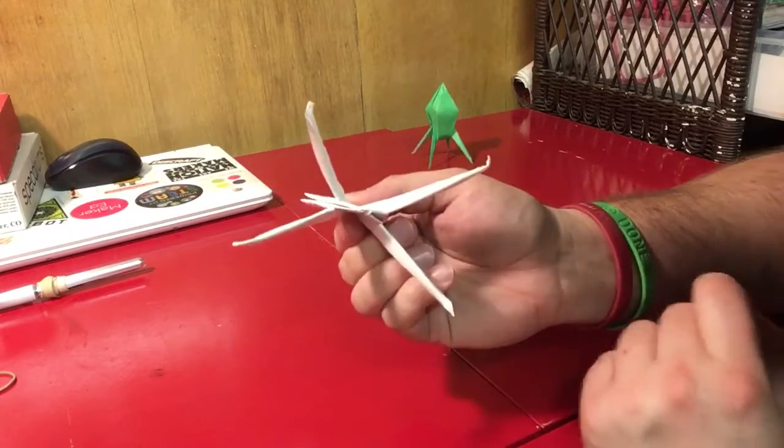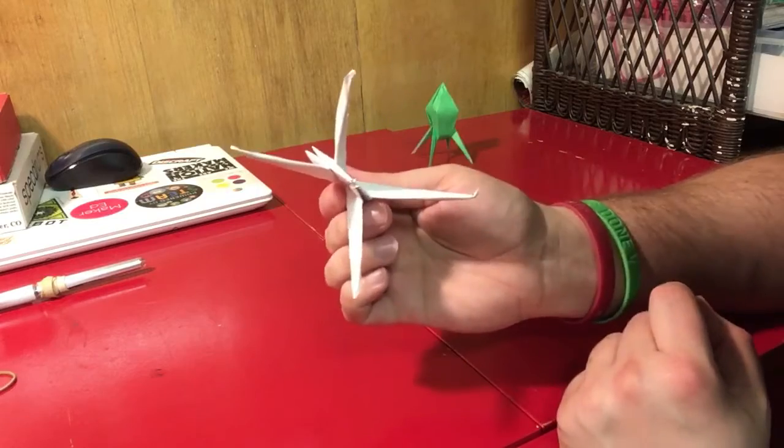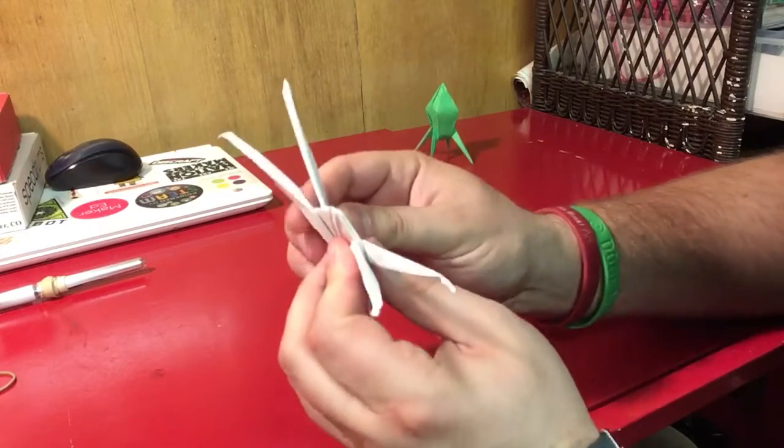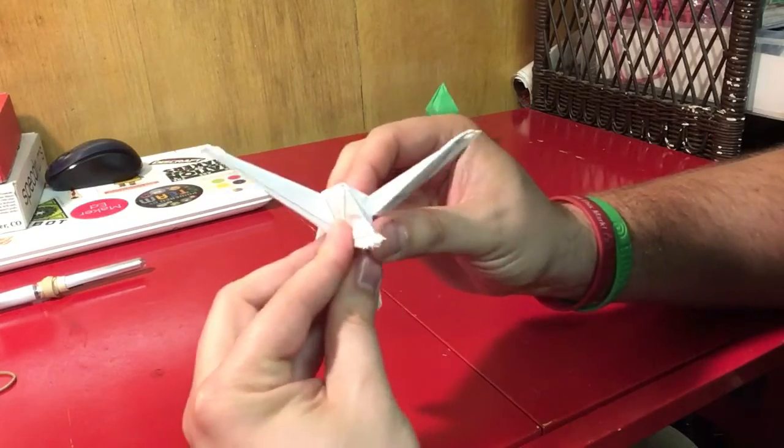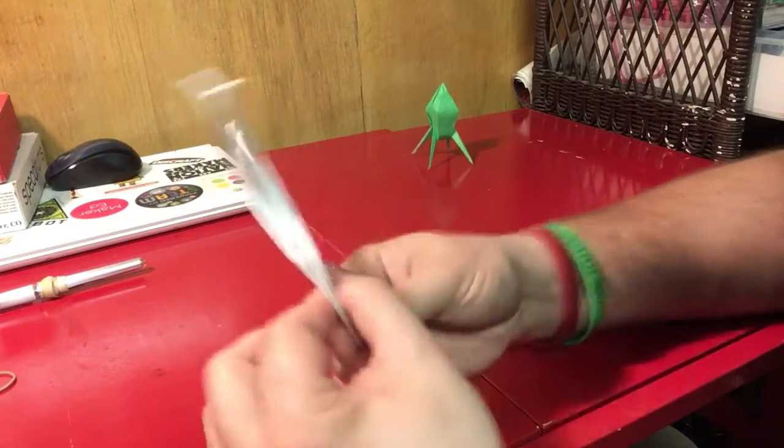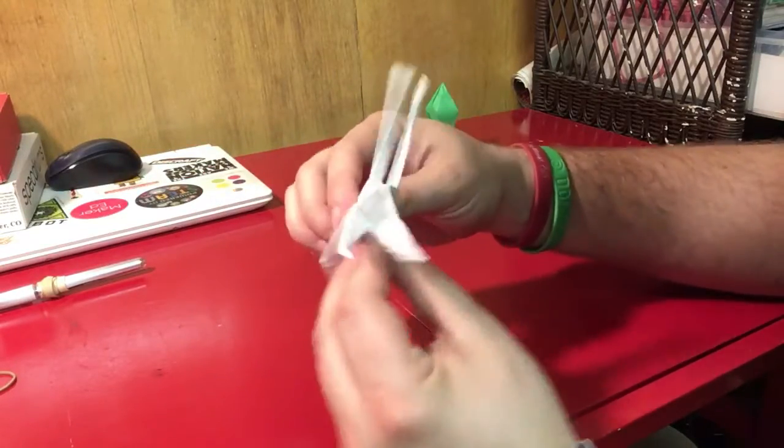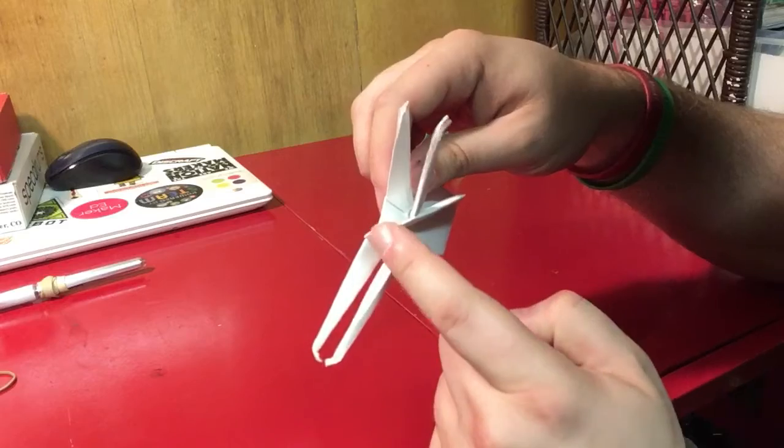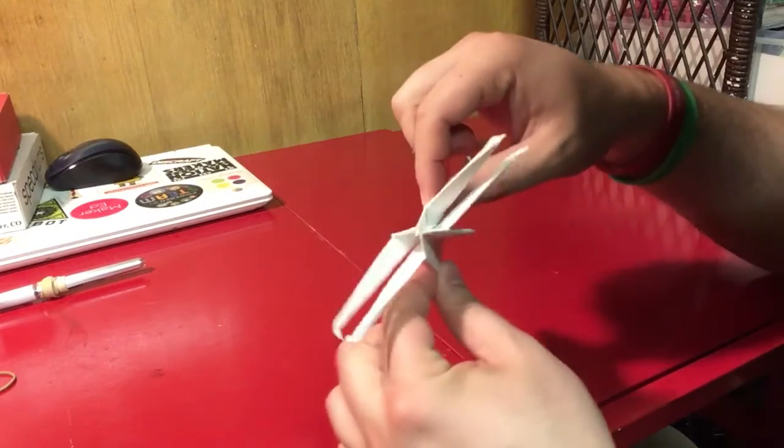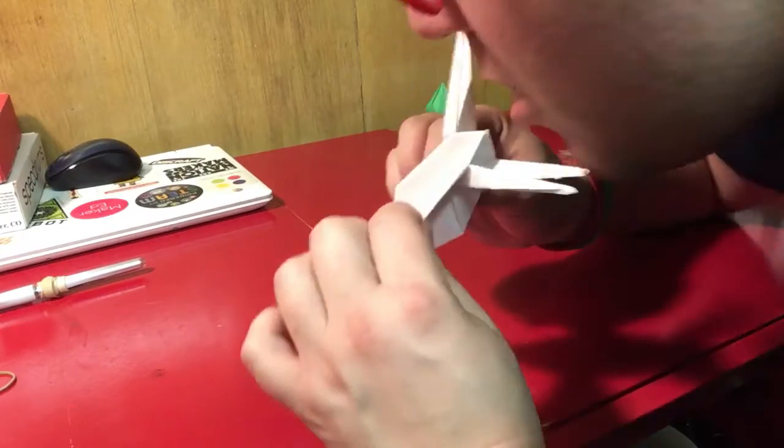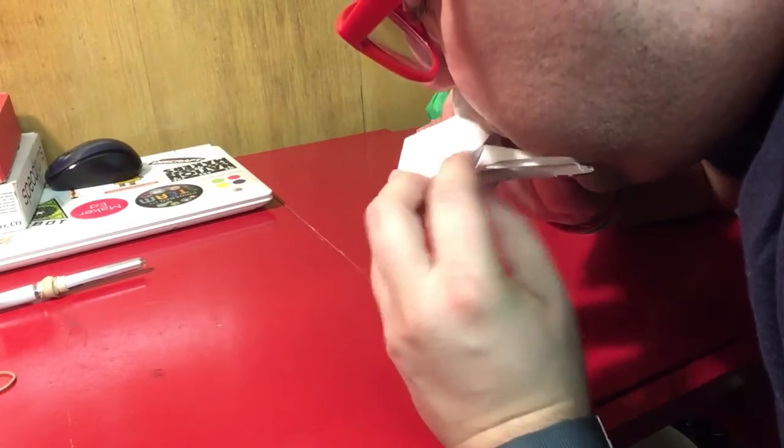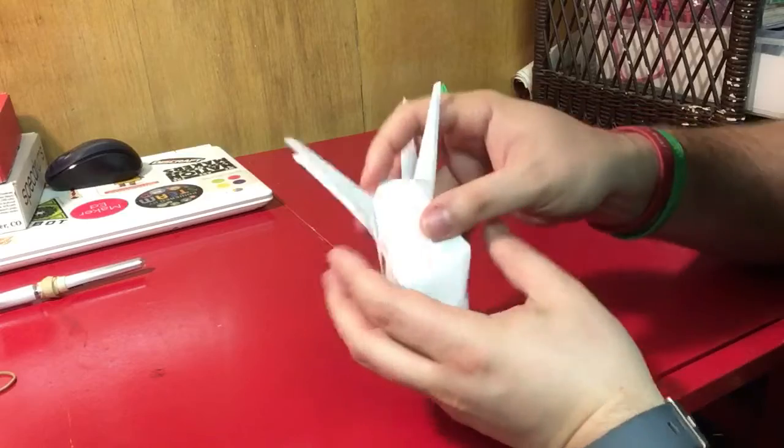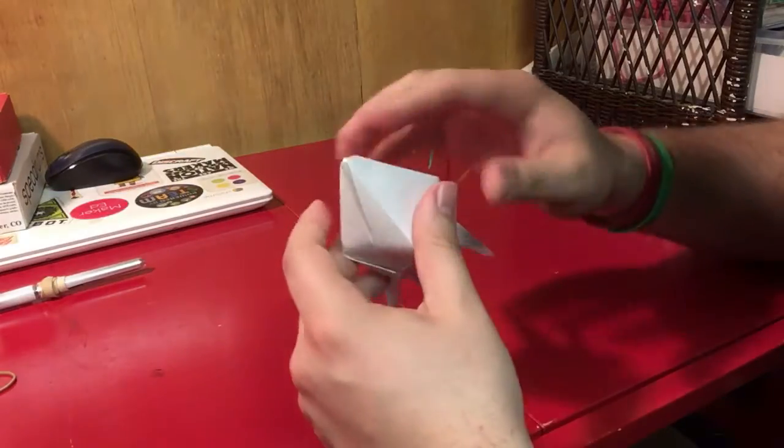The bottom of the rocket has a hole just like the Japanese water bomb or balloon. That's where we're going to inflate it. To make it easier, take these sides and fold them over, then fold back to create a crisscross shape. Now blow into that hole and lightly pull the corners of your rocket apart. I also like to give a little push or pinch where we inflated it.